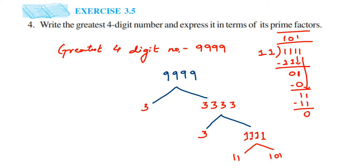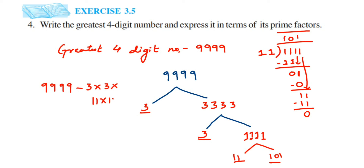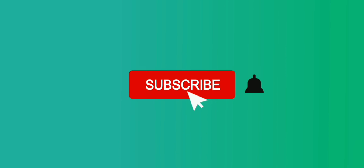Now once we have done this, we rewrite all the prime factors of 9999. We got 3, 3, 11, and 101. So 9999 equals 3 into 3 into 11 into 101. There are many ways of doing this — this is the factor tree method which I have used. I hope this question is clear. If you have any other question or doubt, you can drop a comment. Thank you so much for watching.